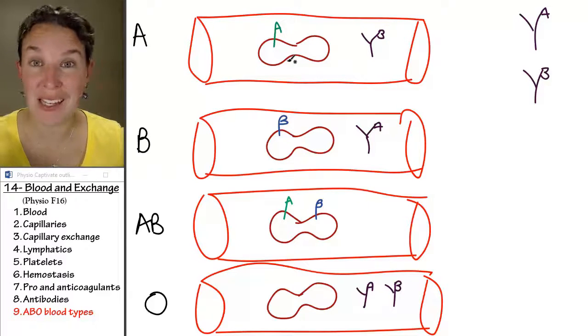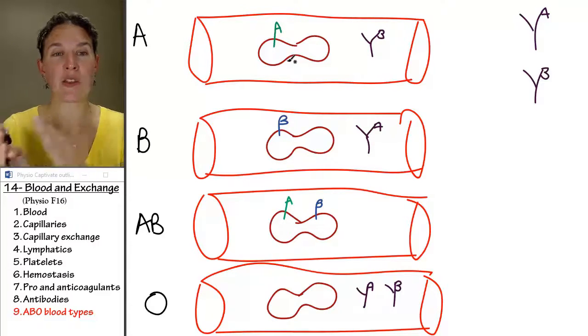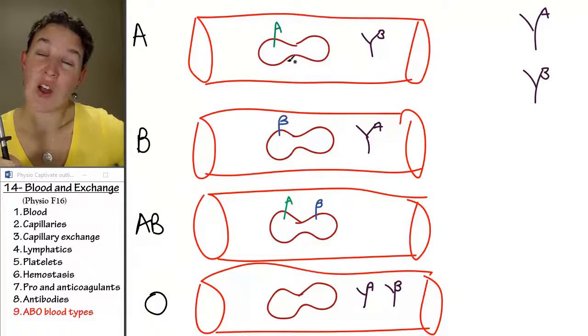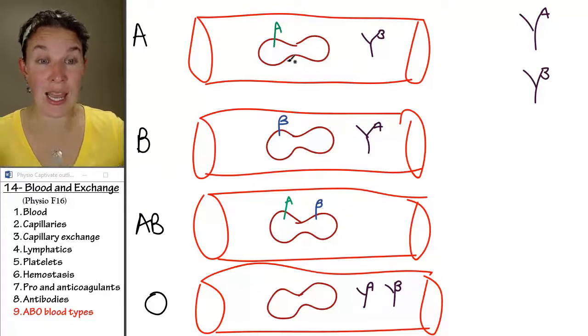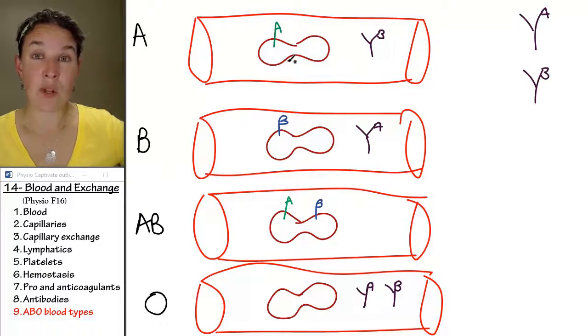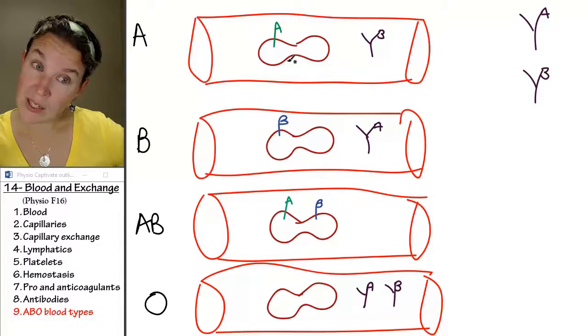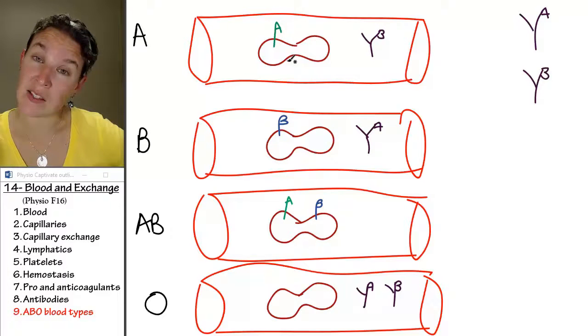When you donate blood, most of the time you do not donate whole blood. You donate either red blood cells or you donate plasma, one or the other. So, you have to clarify when you're asked a question like this. You have to say, can Joe donate blood to Bob? You have to say, are we talking about whole blood or are we talking about red blood cells or are we talking about plasma? Because the answers are going to be different depending on the case.